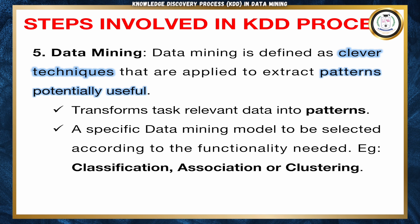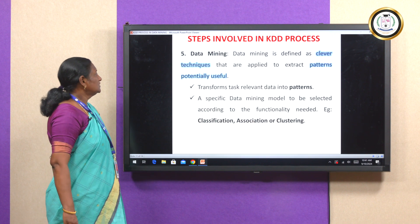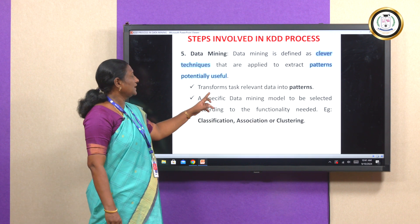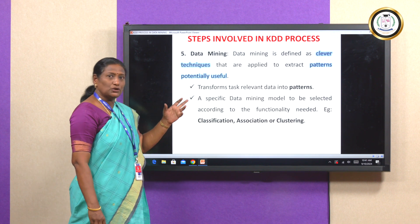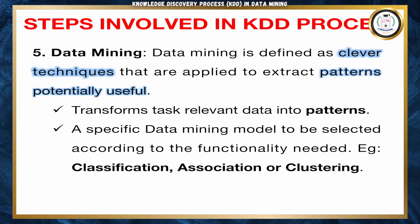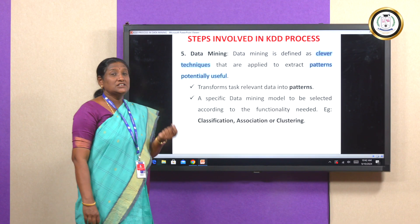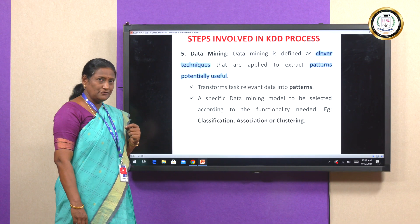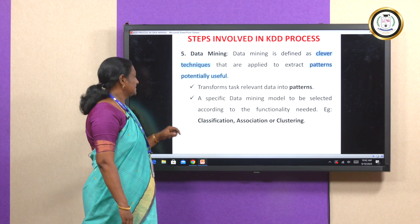The fifth step is the most important step in the KDD process — data mining. Data mining is the process of finding hidden or unusual patterns from large amounts of databases, transforming task-relevant data into interesting patterns. In this step, it is important to identify the specific model needed for the functionality being performed. That model can be a classification model, association model, or clustering model. Selecting the appropriate model is a vital part of step five.